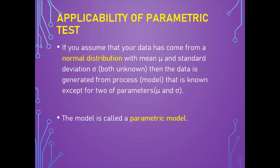If you assume that your data has come from a normal distribution with mean denoted as mu and standard deviation denoted as sigma, then the data is generated from a model known except for two parameters: mean and standard deviation. In that case the model is called parametric. For example, height is roughly a normal distribution — if you graph height from a group of people, you would see a typical bell-shaped curve, also called the Gaussian distribution. Parametric tests are generally more powerful, requiring a smaller sample size than non-parametric tests.